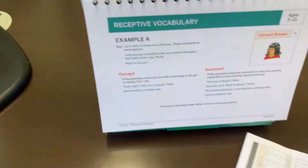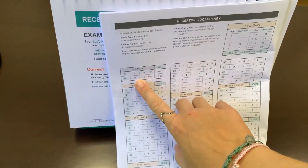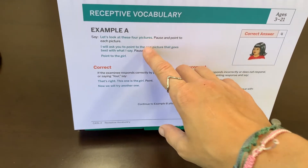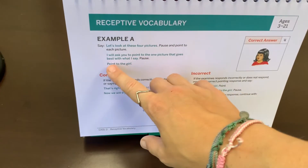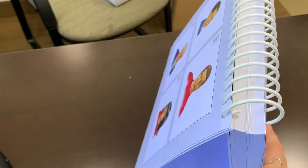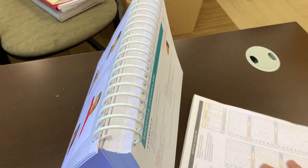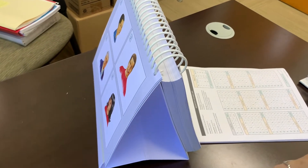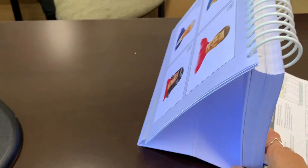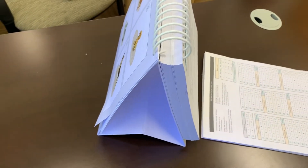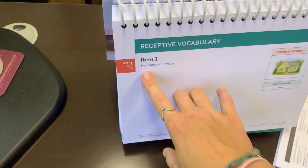You always start with examples — everyone gets the examples first. You say, 'Let's look at these four pictures. I will ask you to point to one picture that goes best with what I say. Point to the girl.' For administration, you want to position yourself so you can see what your client is doing — record form behind the easel on your side. This will be your view, and you can record responses at the same time as you flip through the items.